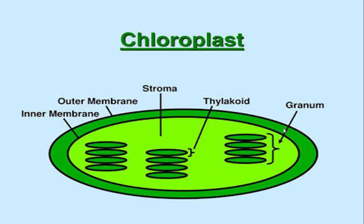Today, students, let us look at the structure of the chloroplast. The chloroplast has a few main structures. It is a very simple organelle composed of two membranes: the outermost membrane and the inner membrane.